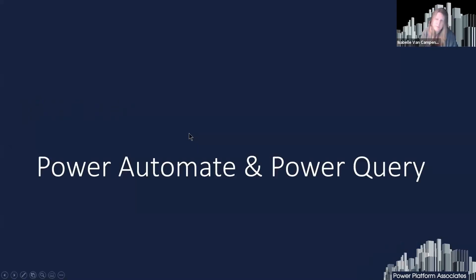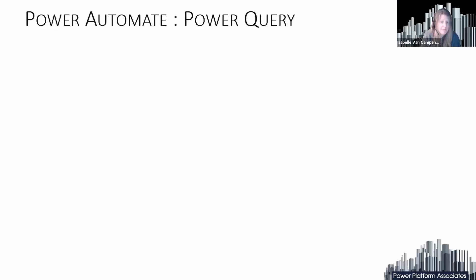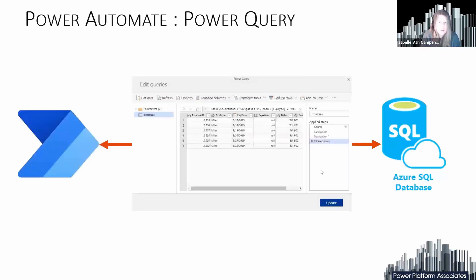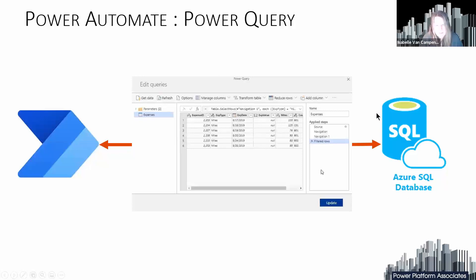Power Automate and Power Query: there is an action called Power Query in Power Automate that allows you to use the Power Query interface. It's still in preview — I think something like three or four years — it's been there forever, still in preview. The only thing you can use is a connection to an Azure SQL database, which is really limited, and they are not investing into it anymore.